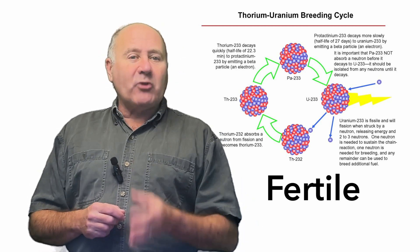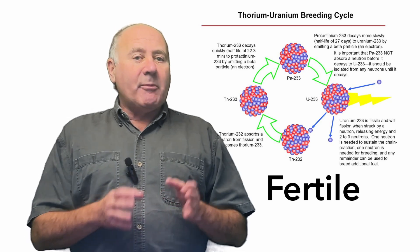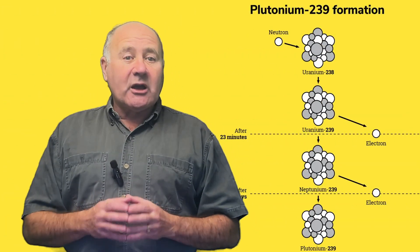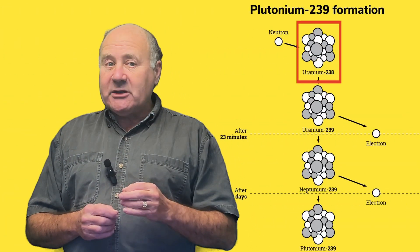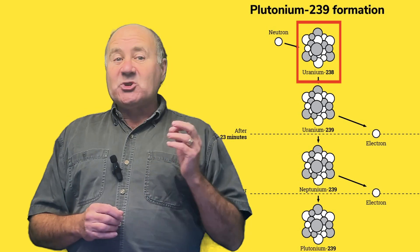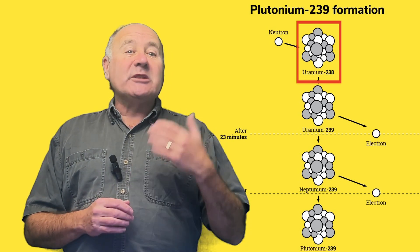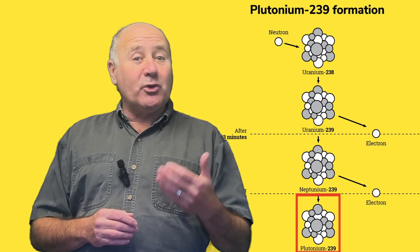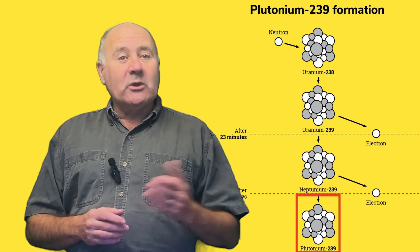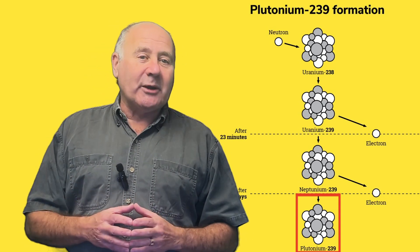For instance, in pressurized light water reactors, about 25 percent of the energy comes from when uranium-238, which is fertile, is struck by a neutron and it transmutes into plutonium-239, which is fissile. It releases energy when struck by a neutron.